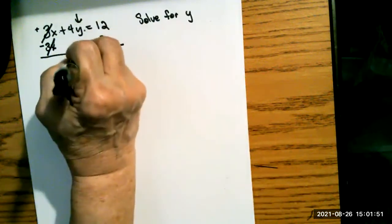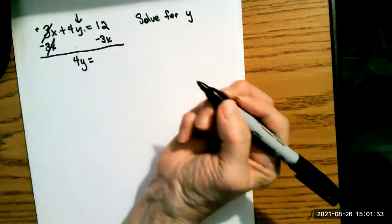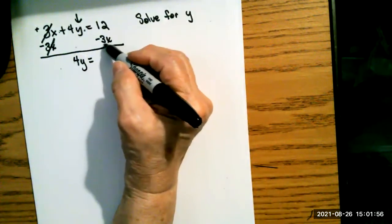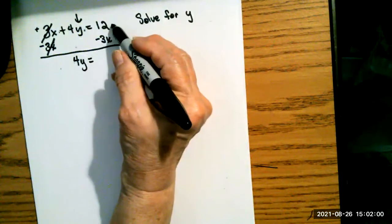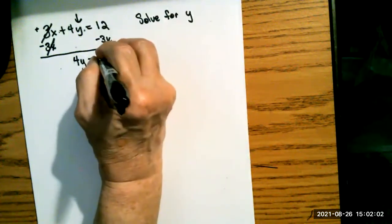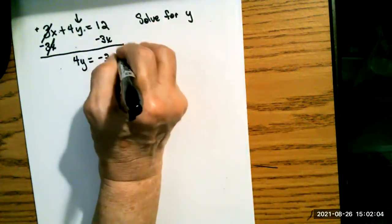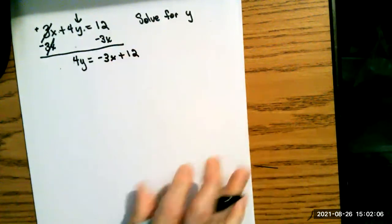We can bring down the 4y on this side of the equals. On this side of the equals, I can't actually add or subtract the negative 3 and the 12, because the 12 doesn't have an x on it. So I just have to write these down by each other. The 12 is understood to be positive.